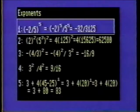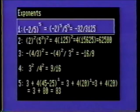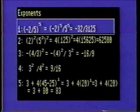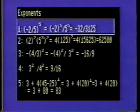Number 1. Since the negative base is raised to an uneven power, the final result will be negative. Negative 2 to the 5th power is negative 32. 5 to the 5th power is 3125. When these two results are combined, the result is negative 32 divided by 3125.